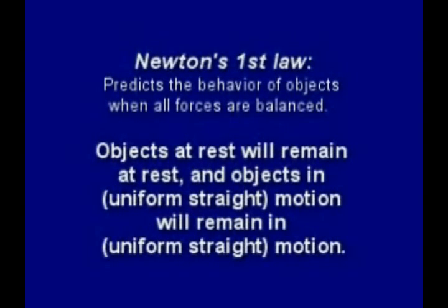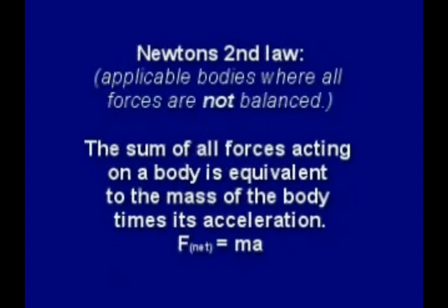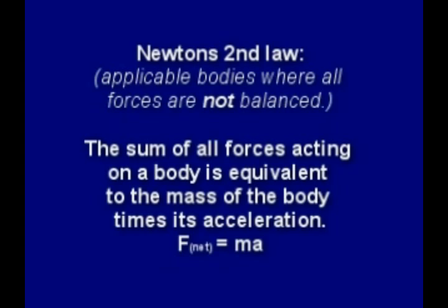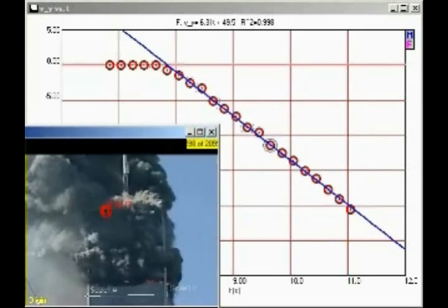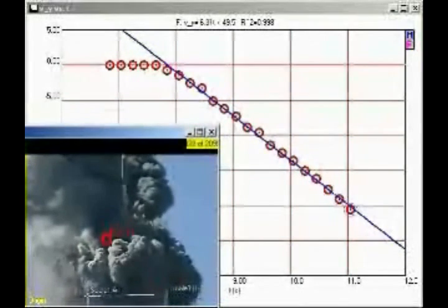Newton's first law predicts the behavior of objects when all forces are balanced: objects at rest will remain at rest and objects in motion will remain in motion. His second law is applicable to bodies where all forces are not balanced: the sum of all forces acting on a body is equivalent to the mass of the body times its acceleration — F equals ma. Newton's third law applies to all bodies regardless if the forces are balanced or not: for every action or force there is an equal and opposite reaction or force. David Chandler carefully measured the acceleration of the roof of Tower 1. Not only did it not experience any jolts as it fell, but it uniformly accelerated.